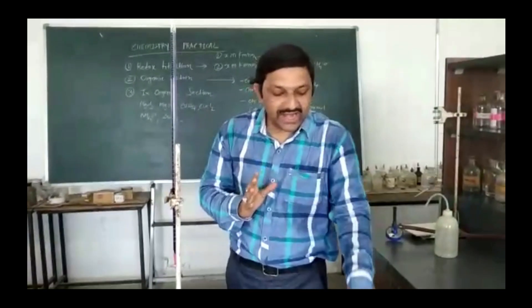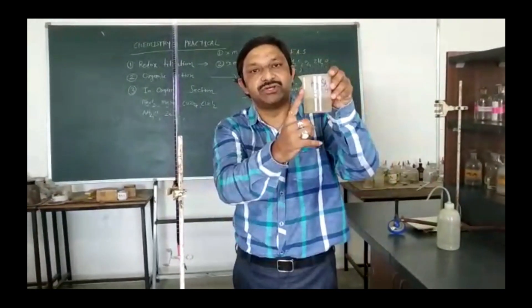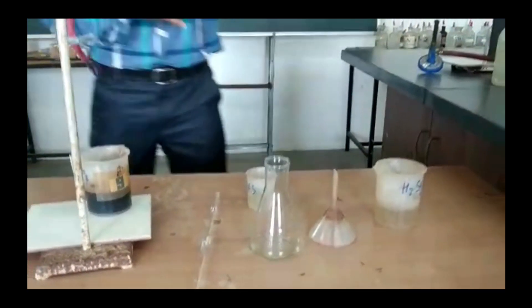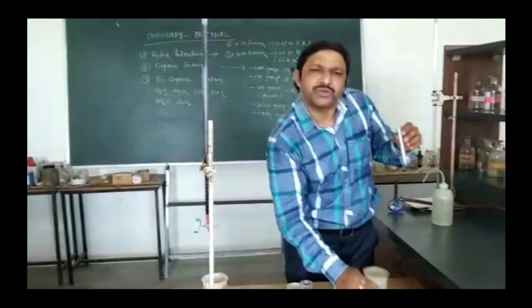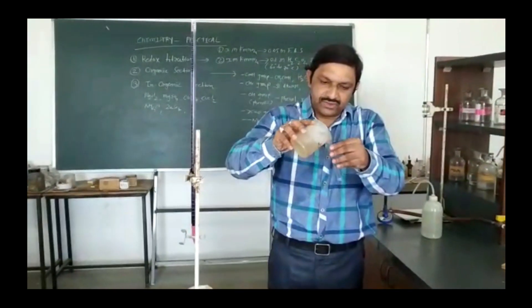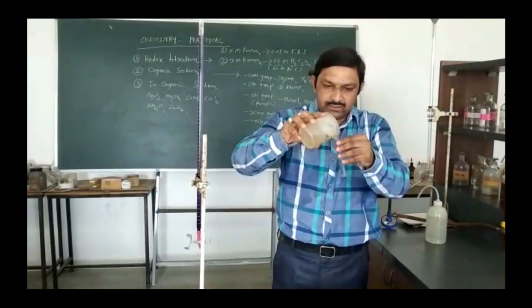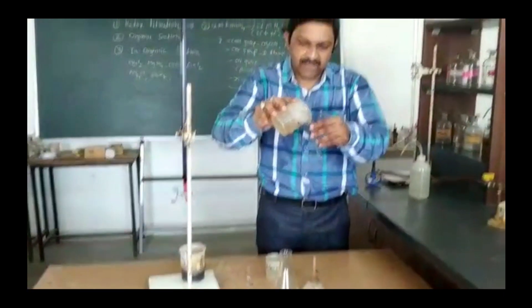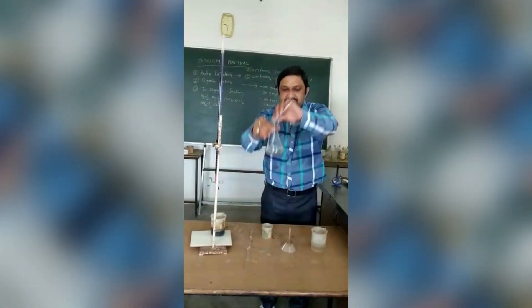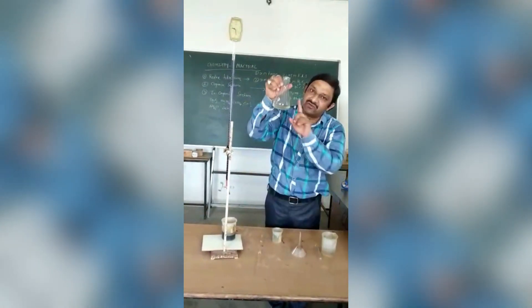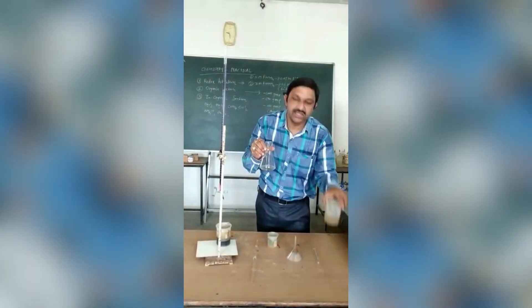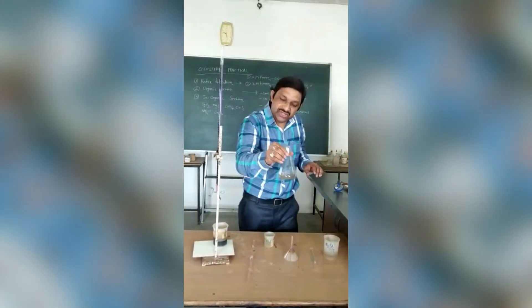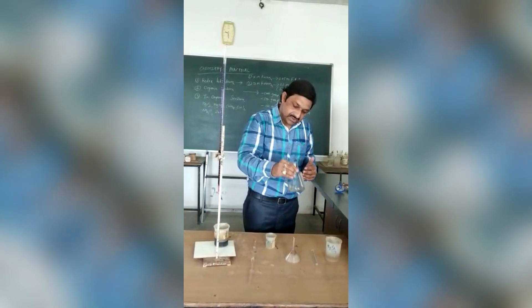Next step: you have to add dilute sulphuric acid solution. You have to take one and a half test tubes — one into your conical flask and half more is enough. So here is your ferrous ammonium sulphate solution plus dilute sulphuric acid solution. Stir your solution first.